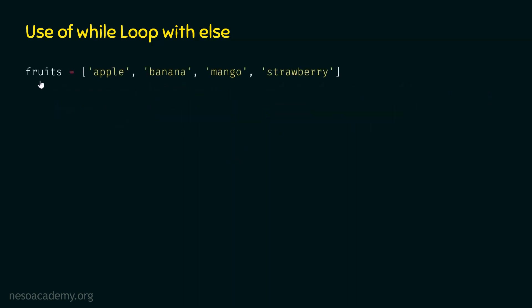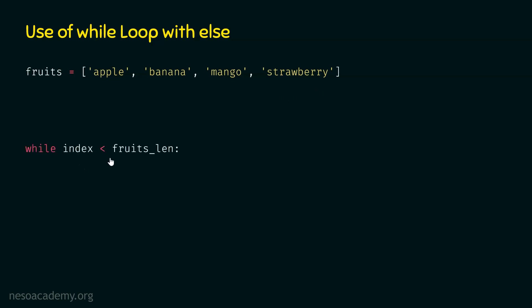Let's first create the list fruits, which consists of four fruits: apple, banana, mango, and strawberry. We need to write a program to check whether orange is available in this list. We can use the while loop to compare each item of this list with orange. If orange is available, we will print 'orange is available'; otherwise, we will print 'orange is not available.' The while condition will check if the current index is less than the length of the list: if index is less than fruits length.